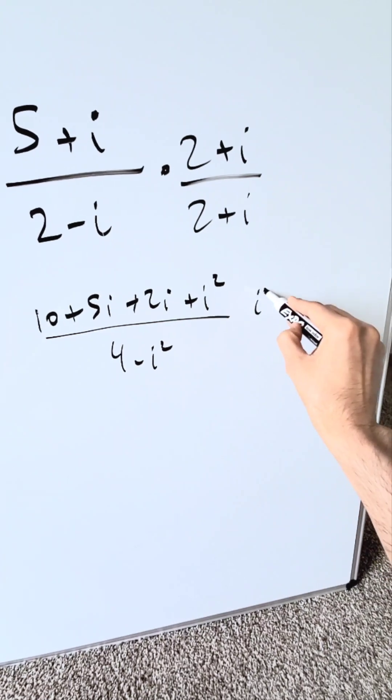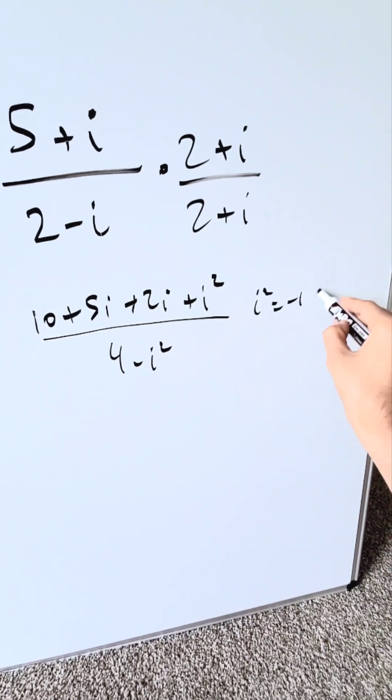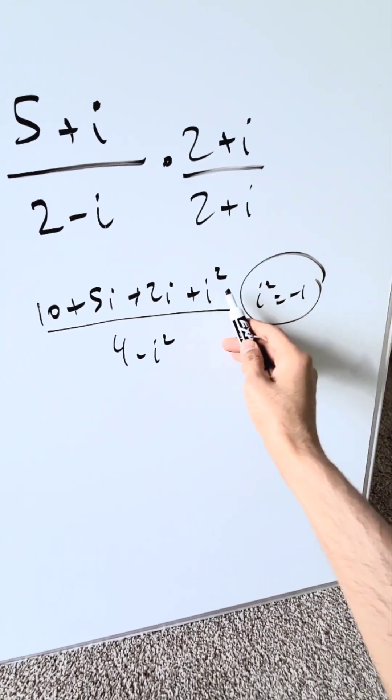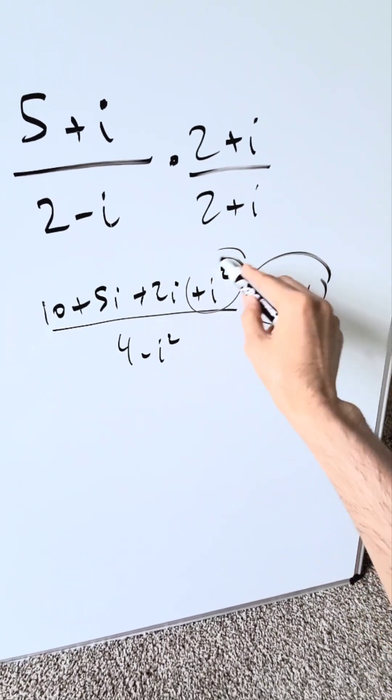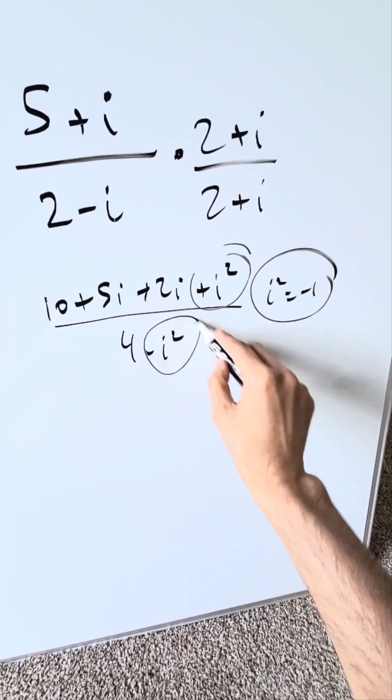Keep in mind, i squared is always equal to minus 1, and you'll bring that in — over here in the numerator and over here in the denominator.